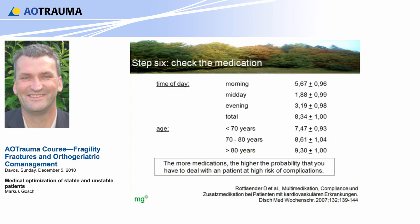Step 6: check the medication. These are data from Germany showing that patients aged 70 to 80 take nearly 9 medications, and over 80 nearly 10 medications each day. It's very simple: the more medications, the higher the probability that you have to deal with a patient at risk of complications. The longer the list, the higher the risk.